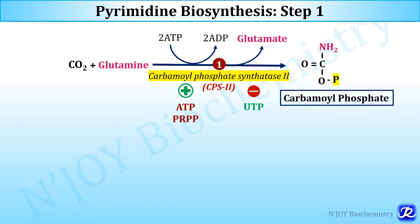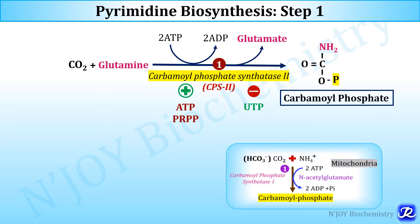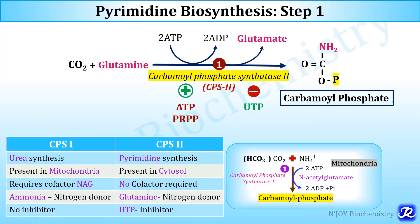There is another enzyme, carbamoyl phosphate synthase 1 (CPS1), which is important in the urea cycle and is located in the mitochondria. CPS1 catalyzes formation of carbamoyl phosphate from carbon dioxide and ammonia, also utilizing two ATPs, and its activator is N-acetylglutamate. CPS2 leads to carbamoyl phosphate formation in pyrimidine biosynthesis.